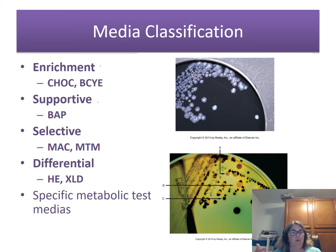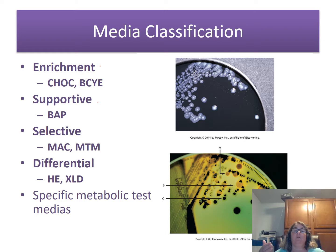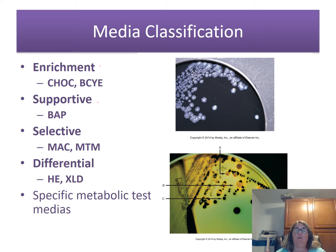A second classification is the supportive media. A supportive media is probably the most basic type — it will support the growth of most non-fastidious organisms. Our most common one is trypticase soy agar with five percent sheep blood, otherwise called a blood agar plate or BAP. It will grow almost anything — mostly the non-fastidious organisms. There are several other types of supportive medias such as trypticase soy agar and nutrient agar, but the blood plate is the most common.